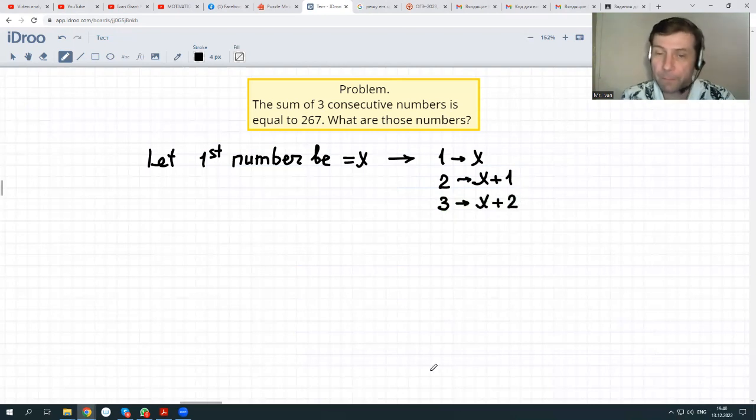Three consecutive numbers. What we are told about them? That their sum is equal to 267. Well, let's just find their sum. x is the first plus x plus 1 is the second plus x plus 2 is the third. What is the sum? 267.